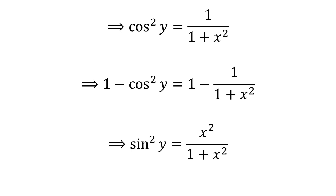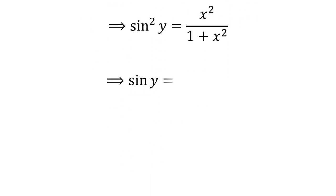So, sine squared of y is equal to x squared divided by 1 plus x squared. Taking the square root of both sides gives us sine of y is equal to x divided by the square root of 1 plus x squared.